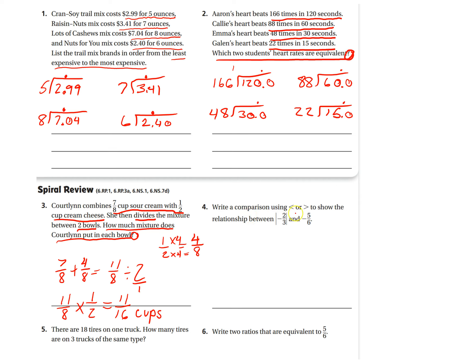Okay. Number 4. Write a comparison using less than or greater than to show the relationship between the absolute value of negative 2/3 and negative 5/6. So, remember the absolute value is just how far away from 0 this is. So, negative 2/3 is 2/3 units away from 0. I'm going to put that circle. That's where you're going to put your greater than or less than sign. And then negative 5/6. Well, you can obviously see if 1 is positive and 1 is negative, the positive number is going to be greater.